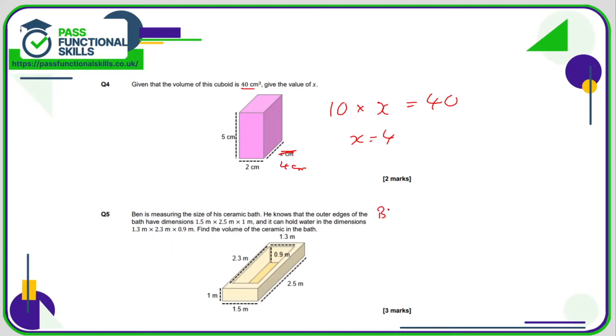So let's call the solid shape the big volume and the bit that's cut out the small volume, and then we just need to subtract the small volume from the big volume and we've got the volume of the ceramic. So the big volume is going to be 1 times 1.5 times 2.5, and the small volume is going to be 2.3 multiplied by 0.9 multiplied by 1.3.